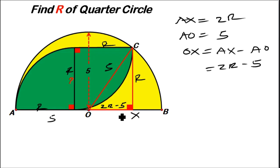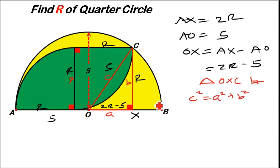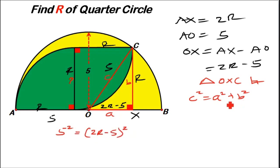Now if you look at triangle OXC, that triangle is a right-angle triangle, so we can use Pythagoras' theorem. When we know the two shorter sides A and B, the longer side C satisfies C squared equals A squared plus B squared. Substituting: C is 5, A is 2r minus 5, and B is r. So we get 5 squared equals (2r minus 5) squared plus r squared.